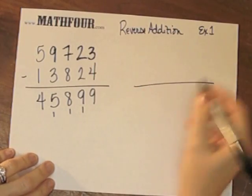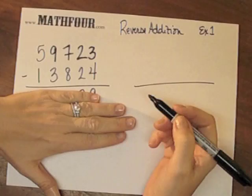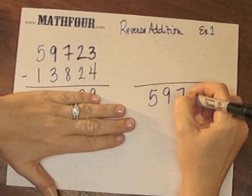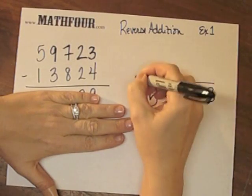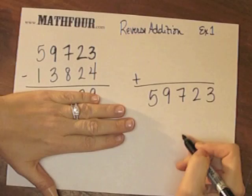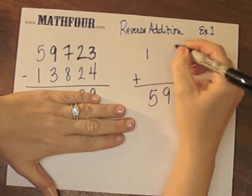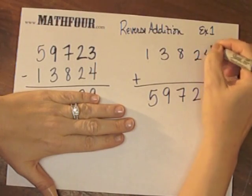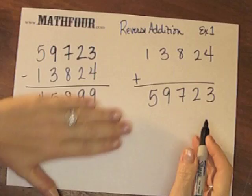If you wanted to do it the reverse way, back to the original problem, we have 59723 as the answer of the addition problem and 13824, trying to keep these guys lined up because they're kind of crazy.